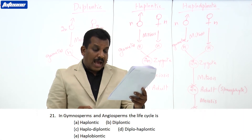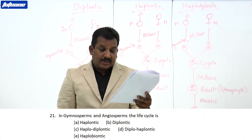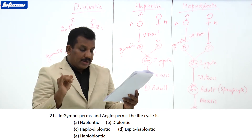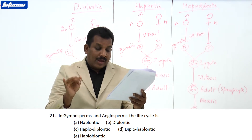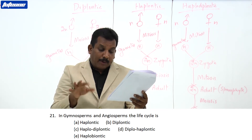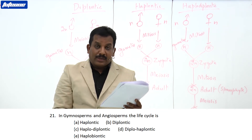In gymnosperms and angiosperms, the life cycle is: haplondic, diplondic, haplodiplondic, diplohaplondic, or haplobiontic?